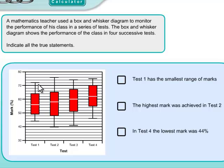Test two and three definitely have a bigger range than test one. But test four is quite similar, so we have to check that one a little bit more carefully.